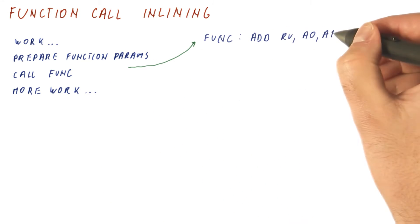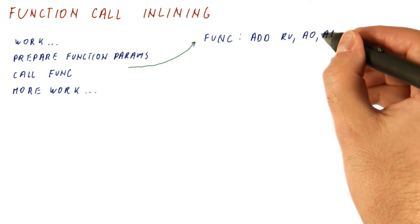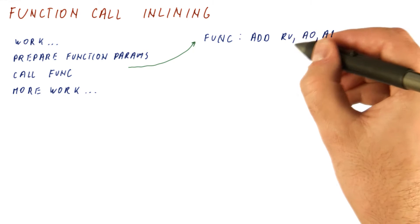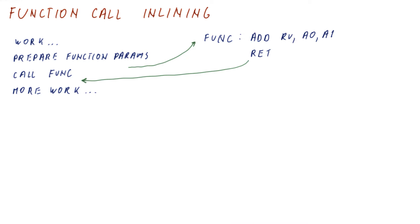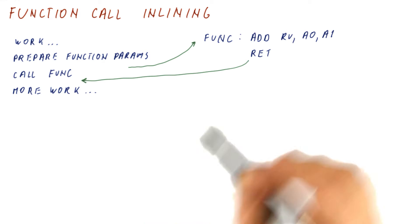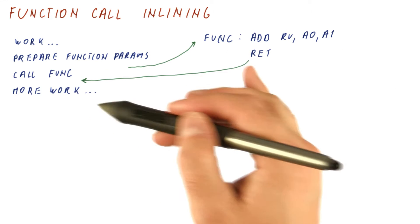When we call a function, let's say the function itself was just adding the first two parameters and putting that in the return value, then returning. So this sends us back here, and then we continue with the more work. This is what a normal function call looks like.